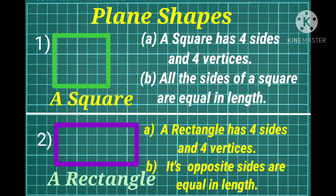Now which figures are called the plane shapes? Square, rectangle, triangle, circle and oval are the examples of plane shapes.